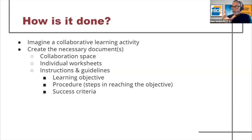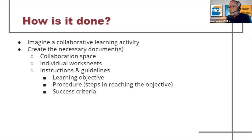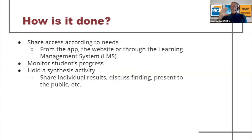Here's how it's done. First, imagine a collaborative learning activity. Then create the necessary documents: a collaboration space, maybe individual worksheets if they apply, and give instructions and guidelines where the learning objective, the procedure, the steps in reaching the objective, and the success criteria — differentiated if possible — are clearly detailed. Then share what you've prepared, either directly from the app or website, or through the learning management system.